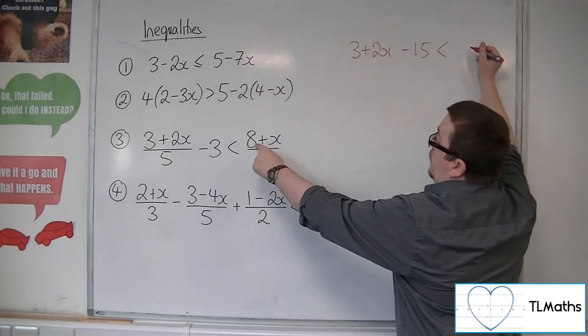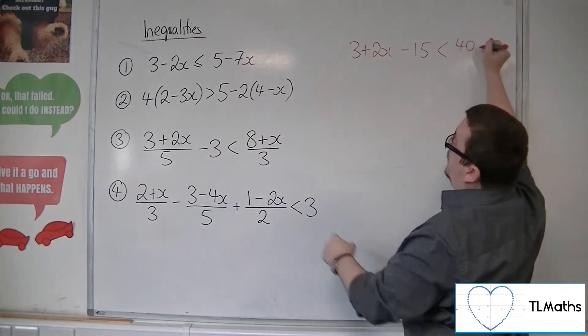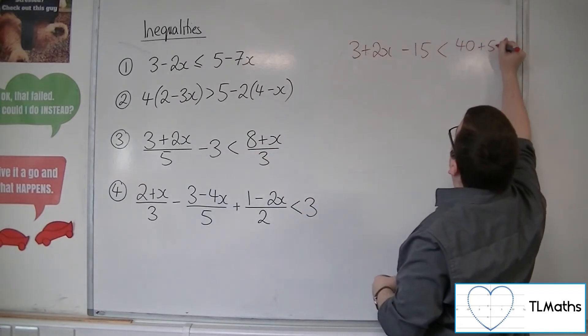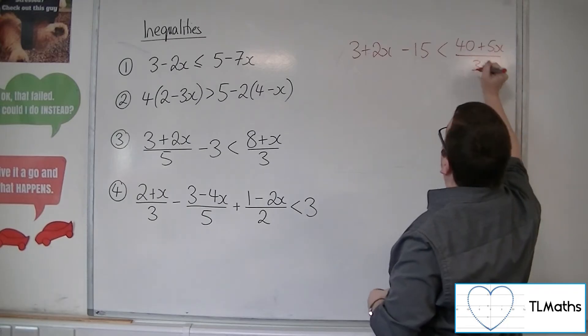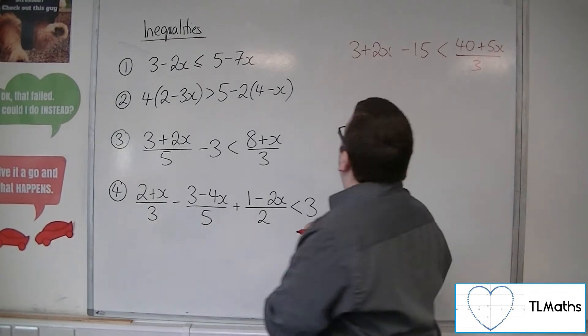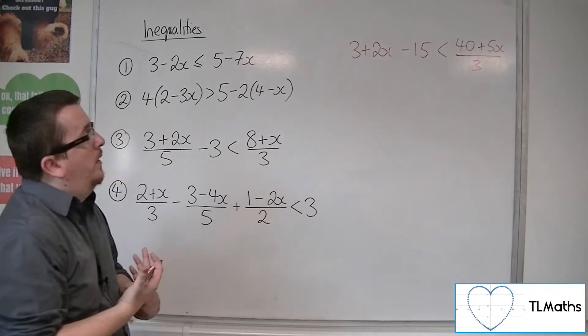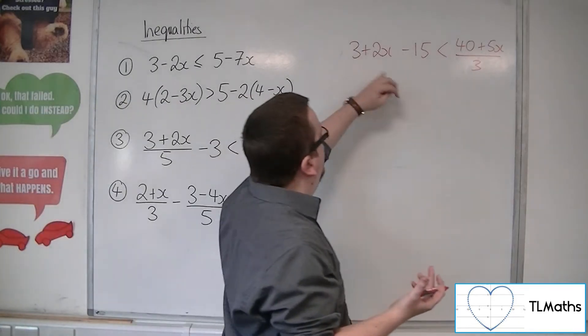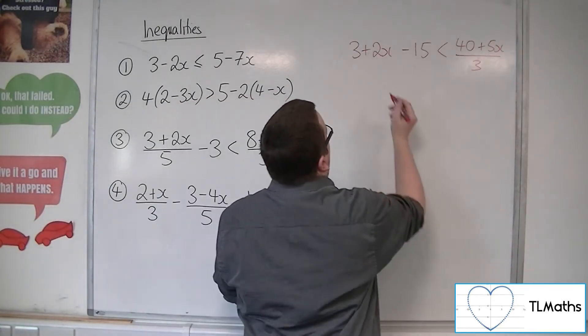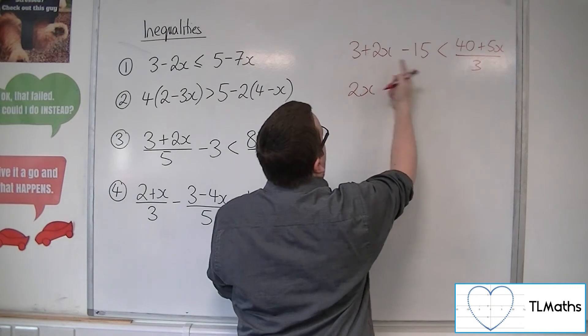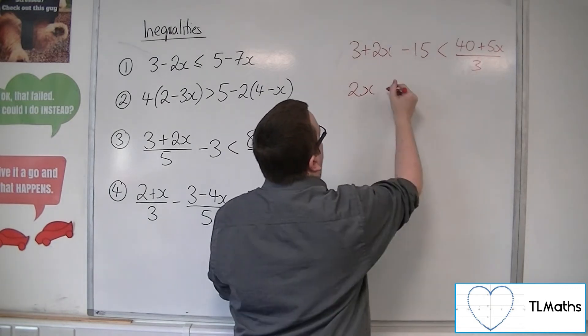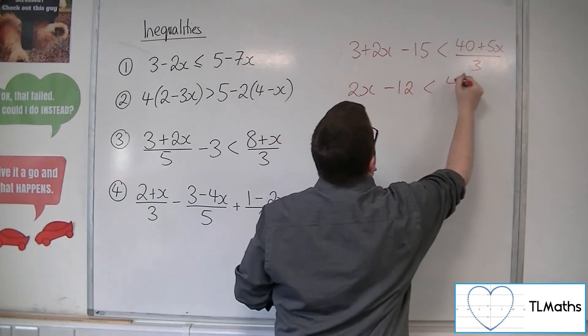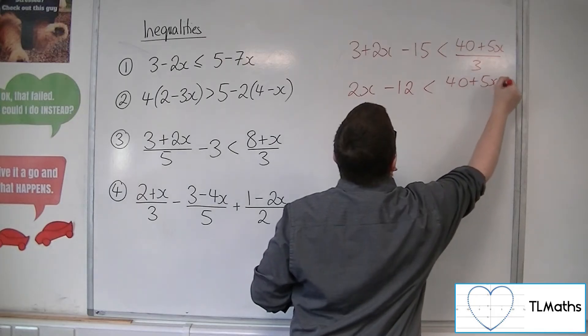So I'm going to have 5 lots of 8, so 40. 5 lots of x, 5x, and that's still over 3. Now it makes sense to tidy up the left-hand side because I've got this 3 and the minus 15. So if I've got 3, then take away 15, I'm going to have minus 12. So this is my situation now.